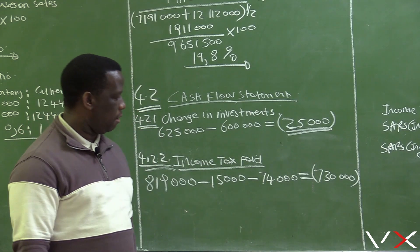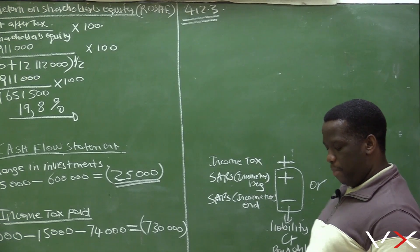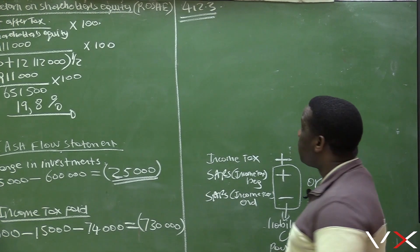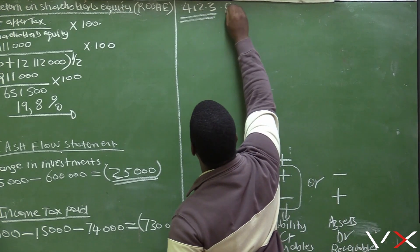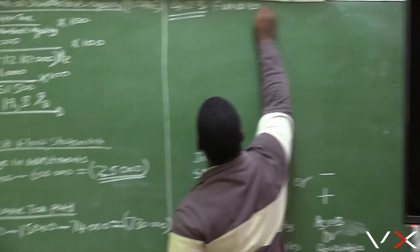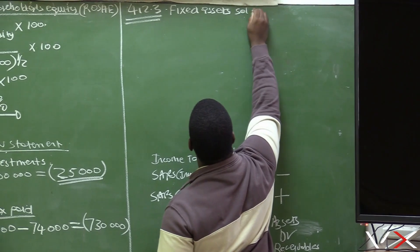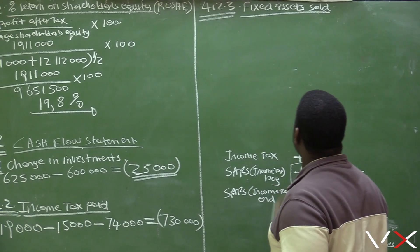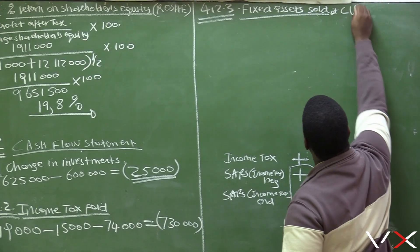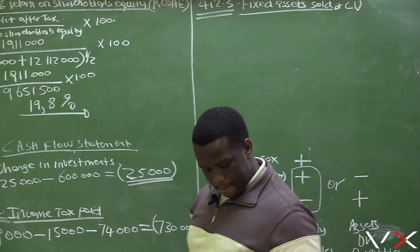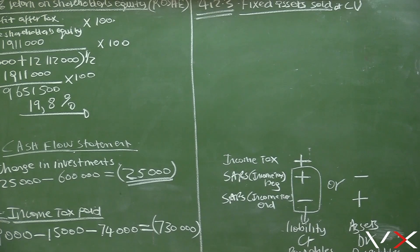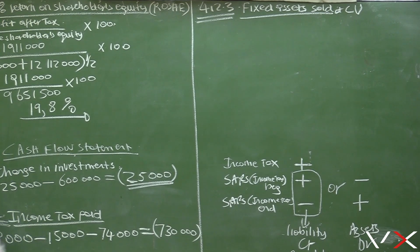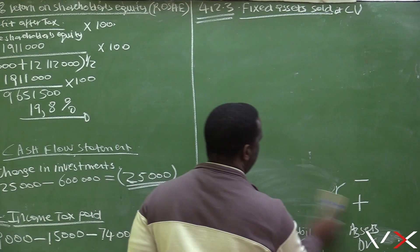4.2.3: we want to calculate fixed assets sold at carrying value for the purposes of recording it in the cash flow statement. It is very important that learners are clear with the fixed asset note.